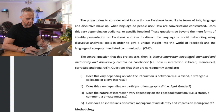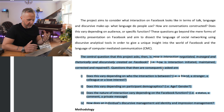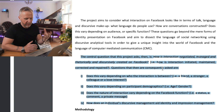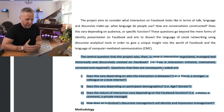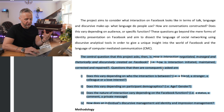In this next section they've laid out specific questions. The central question is: how is interaction negotiated, managed and rhetorically and discursively created on Facebook. I think this is a really excellent question — it pinpoints itself towards academic fields of discourse and rhetorical understanding of identity. I think it could be improved by having a stronger relationship to identity, so rather than 'how is interaction negotiated,' I'd say 'how is identity negotiated, managed and discursively created on Facebook.' They've also got four sub-questions which relate to this and are all relevant, connected and interlinked.